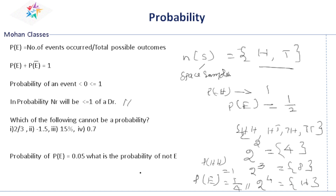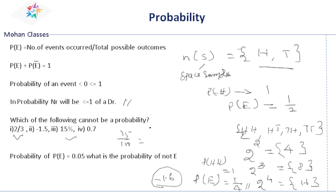Which of the following cannot be a probability? The probability will be expressed as a ratio. Two by three is a probability. 15 percent can be written as 15 by 100, which equals 3 by 20 — it is a probability. Similarly, 0.7 can be written as 7 by 10 — it is also a probability. The only thing that is not a probability is a negative value. So the answer here is negative 1.5.